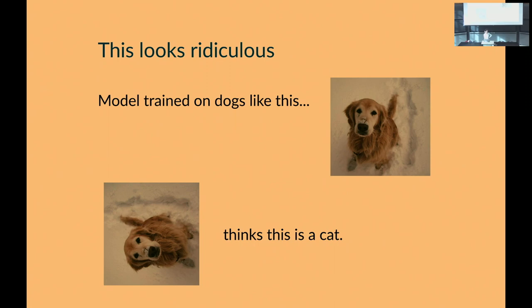Someone mentioned that every time a model generates a hand it never has five fingers — it's three, four, or six. Another example: generating an image of yourself on the beach, your left hand clearly visible but then somehow your arm merges into what looks like your right hand holding a beer can. These are great examples of simple model failures.